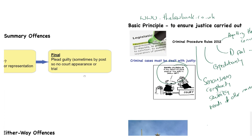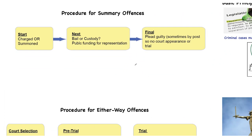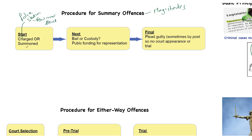I'm going to quickly go through the procedure for each of the summary, either-way, and indictable offenses - how do we get from somebody committing an offense to going to trial. Starting with summary offenses: remember the court of first instance for summary offenses is the magistrates' court. Our starting point is that the defendant is charged or summoned. Generally the charge will be done by the police at the police station, but they only have a right to charge for a few very minor offenses. What would normally happen is there will be a summons as a result of inquiries and a decision to prosecute.